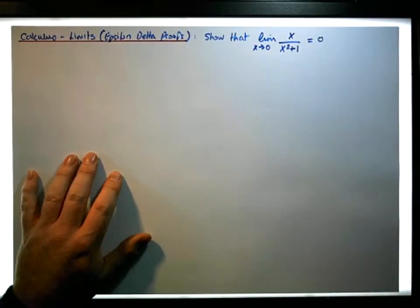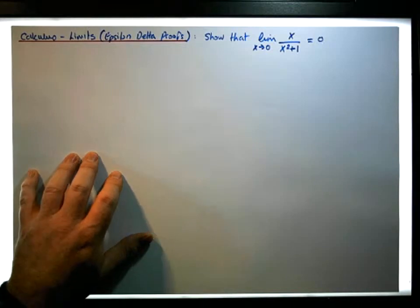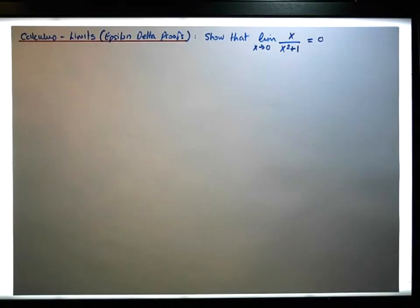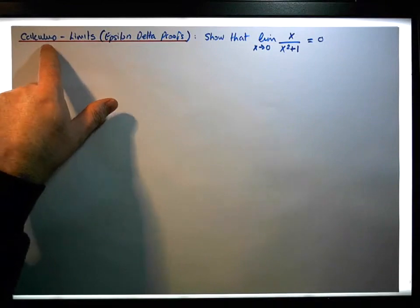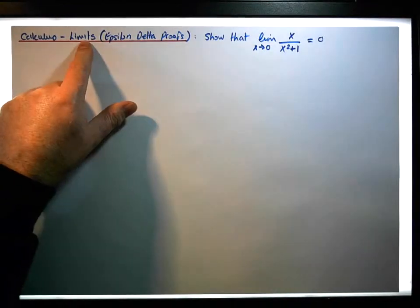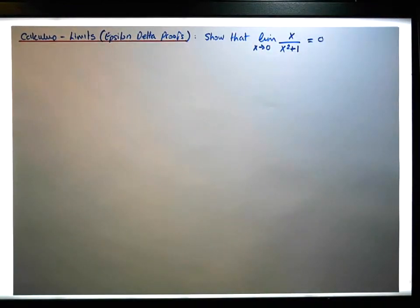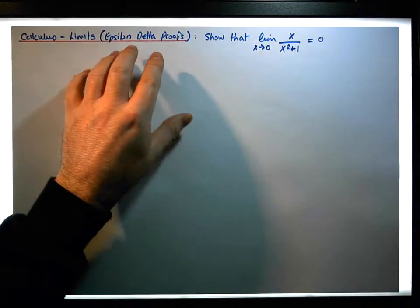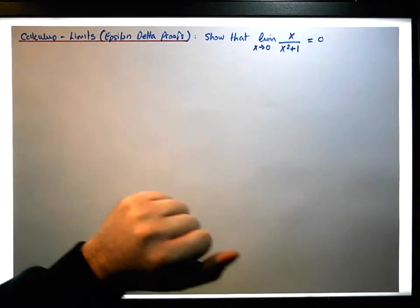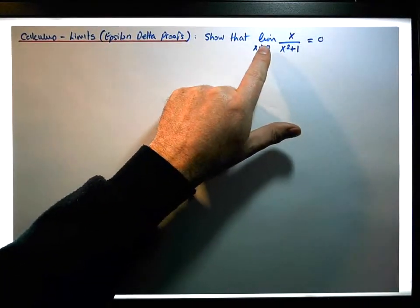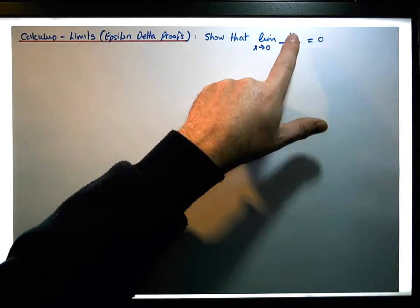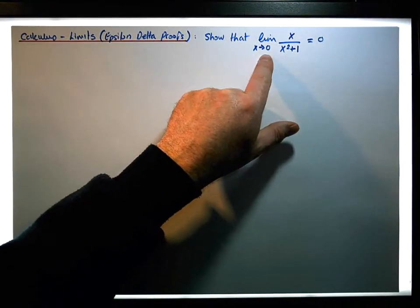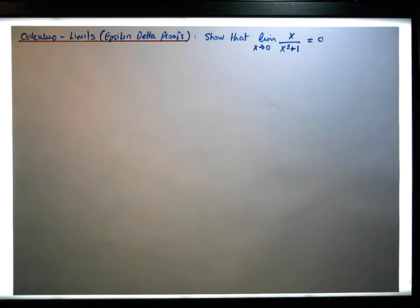Hi guys, this is Jonathan Lambert, Maths and Stats, and this is another video in our series of videos dealing with calculus and limits, and in particular epsilon-delta proofs. What we're going to consider here is to use the epsilon-delta definition of a limit to show that the limit of this rational function, x over x squared plus 1, as x tends to 0, is in fact equal to 0.